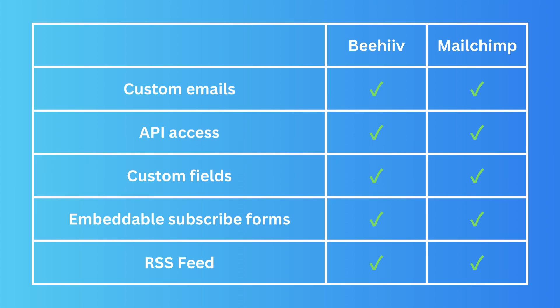Now let's look at a side-by-side comparison. Custom emails are available on both Mailchimp and Beehiiv. API access is also available on both platforms. Custom fields — which let you create custom branding elements to make your emails feel truly your own — are available on both as well.